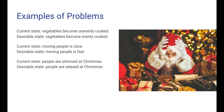Here are some examples of problems. In a cooking practice, it may be the case that vegetables become unevenly cooked while it would be desirable that they were evenly cooked — so there is a gap and therefore a problem. In a transport practice, moving people may be too slow while it would be desirable that it were faster. In a Christmas practice, people may be stressed while it would be more desirable that they are relaxed. In all these cases we have a gap between a present state and a future desirable state, and these constitute problems.